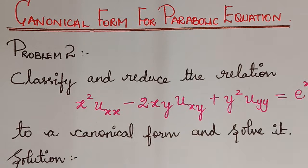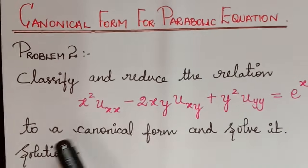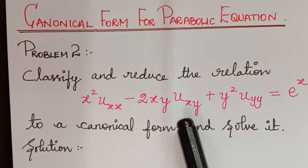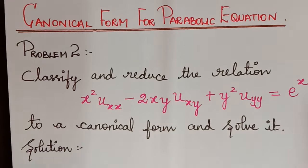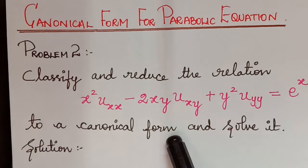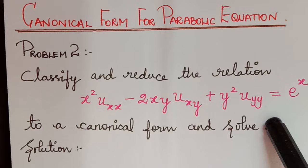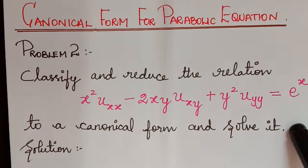Hello students. Under the topic canonical form, here we have the next problem. The question is: classify and reduce the relation x² u_xx minus 2xy u_xy plus y² u_yy equals e^x to a canonical form and solve it. First of all, we have to classify this equation — that is, identify whether this is hyperbolic, parabolic, or elliptic.